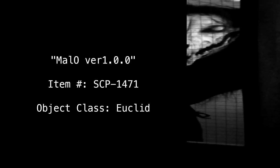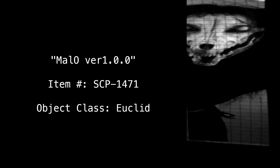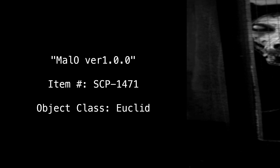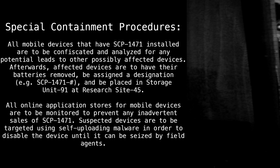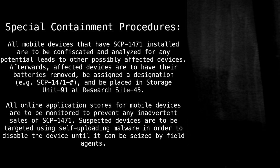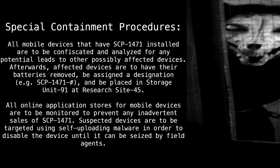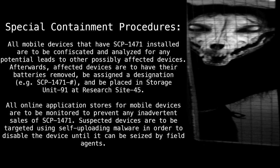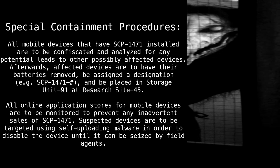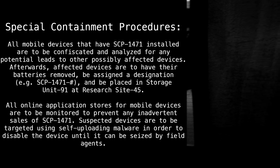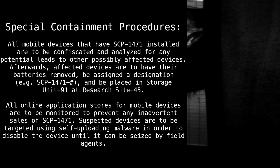Mallow version 1.0.0. Item number: SCP-1471. Object class: Euclid. Special containment procedures: all mobile devices that have SCP-1471 installed are to be confiscated and analyzed for any potential leads to other possibly affected devices. Afterwards, affected devices are to have their batteries removed, be assigned a designation (e.g. SCP-1471-[number]), and be placed in storage unit 91 at research site 45.